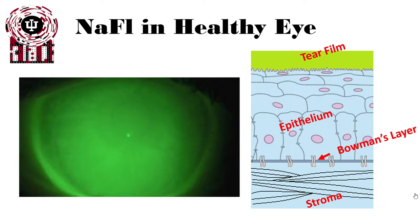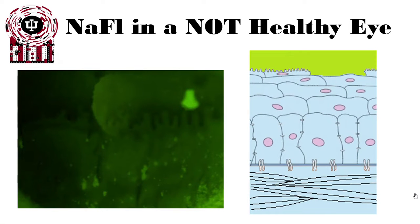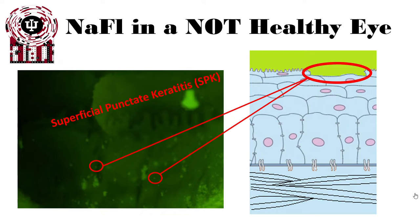When we start to have damage to the epithelium — for example, losing a cell or two on the anteriormost part of the epithelium — it results in little spots. We call this superficial punctate keratitis, or SPK. These are small, bright green glowing spots that we see across the cornea.